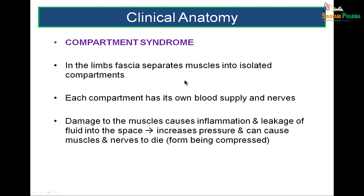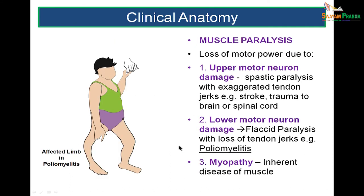Compartment syndrome: in the limbs, fascia separates muscles into isolated compartments, each with blood supply and nerves. Damage to muscles in these compartments can cause inflammation and fluid leakage, creating tightening of pressure in the compartment leading to compression of nerves. Poliomyelitis causes lower motor neuron damage with flaccid paralysis and loss of tendon jerks. Upper motor neuron paralysis can result from cerebral stroke or trauma to the brain or spinal cord.